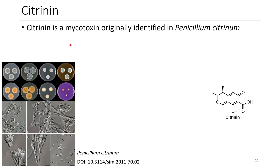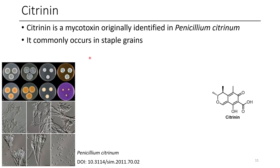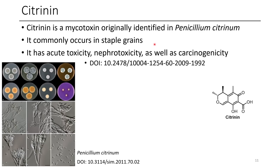The next one is citrinin. It has an interesting motif with alpha-beta unsaturation as well as gamma-delta unsaturation, an oxygen in a six-membered ring, some chirality, and a carboxylic acid. It was originally identified from Penicillium citrinum and also occurs as a trace contaminant in many staple grains. It has acute toxicity, nephrotoxicity — meaning it's bad for your kidneys — and it is also carcinogenic.